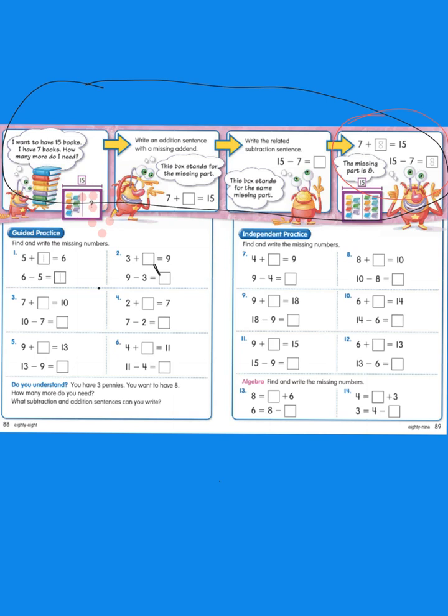Let's read the directions. Find and write the missing number. Number 1, 5 plus blank equals 6. What plus 5 equals 6? Well, if I know I'm at 5 and I count up to 6, I just count up 1. So 5 plus 1 equals 6. That's the same as 6 minus 5 equals 1.